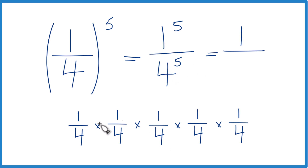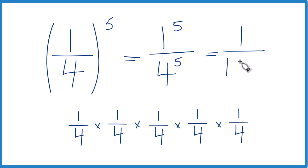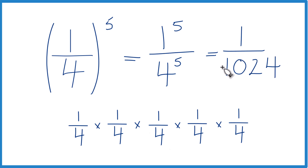4 to the 5th — that's 4 times 4 times 4 times 4 times 4 — that is 1,024. So this is pretty small: 1 over 1,024.